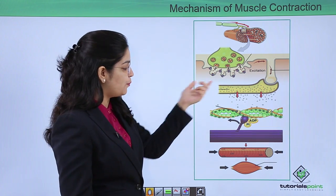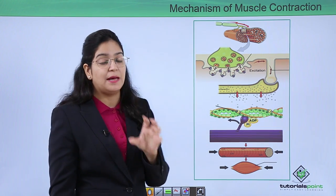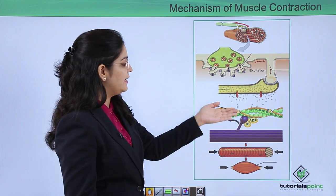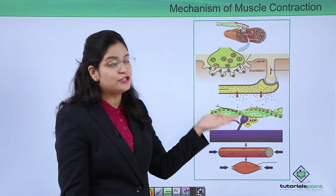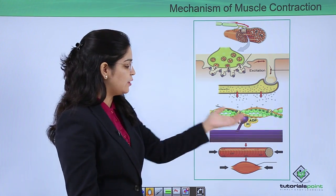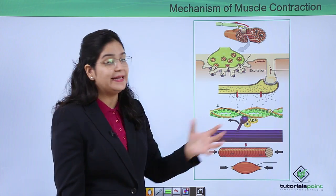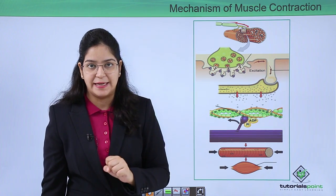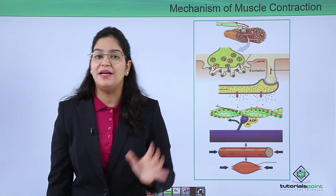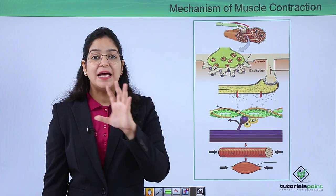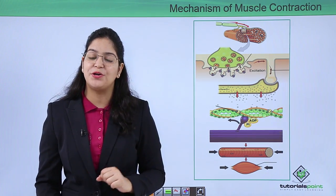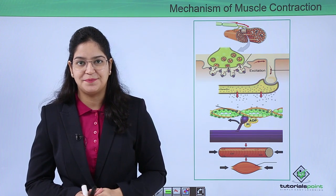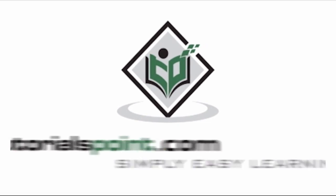To summarize the full steps: when an impulse comes, it causes the sarcoplasmic reticulum to release calcium. This calcium attaches to troponin to remove tropomyosin from the binding site. As the binding site is now free, the myosin head attaches to the binding site and muscle contraction starts. In this video we have learned about the importance of calcium in muscle contraction. I hope you understand the concept. Thank you — TutorialsPoint.com, simply easy learning.